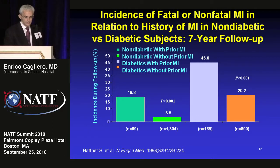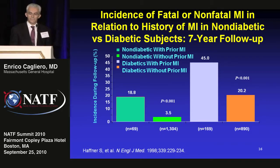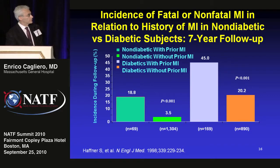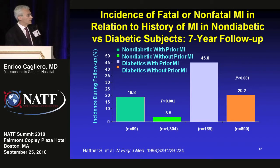Steve Haffner's studies in Finland looked at the incidence of fatal or non-fatal MI in type 2 diabetic patients in relation to prior MI history over seven years. A non-diabetic without prior MI had the lowest risk. A non-diabetic with prior MI had much higher risk. A diabetic patient without any cardiovascular history had the same risk as a non-diabetic with prior cardiovascular disease. And if you had both diabetes and a prior MI, the risk of a second MI was very high.